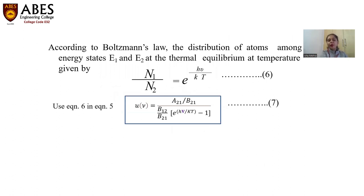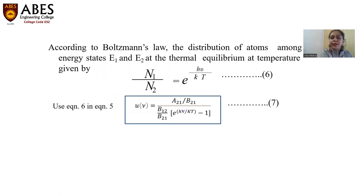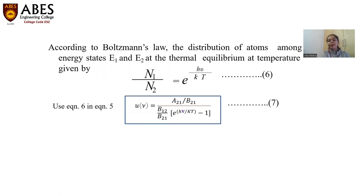Now N1/N2, according to Boltzmann distribution law, the ratio of number of atoms in the ground state to the number of atoms in the excited state equals e raised to the power h-nu/KT, where T is absolute temperature. Using this equation in the previous one to replace N1/N2, we get equation 7 — the energy density of the incident photon in terms of nu, Boltzmann constant K, and T.